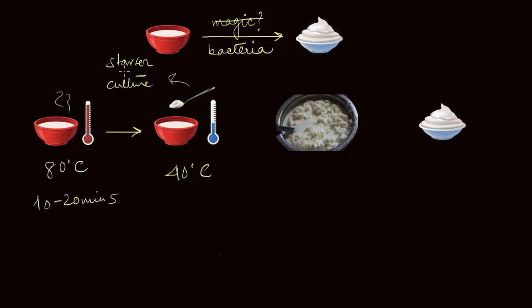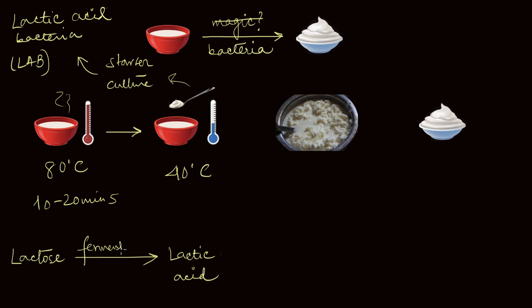Now, the starter culture is full of these bacteria called the lactic acid bacteria, or you can call it LAB for short. What these lactic acid bacteria are going to do is that they will eat away the lactose, which is the sugar that is present in the milk, and produce lactic acid via this process called fermentation.